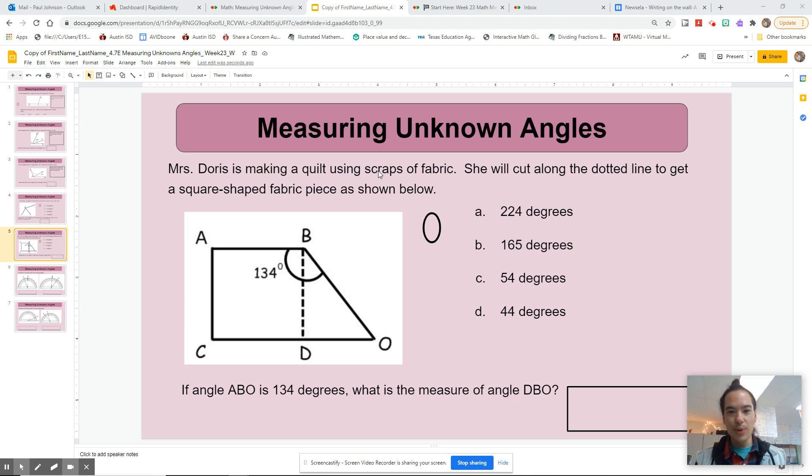So it says, Miss Doris is making a quilt using scraps of fabric. She will cut along the dotted line to get a square-shaped fabric piece as shown below. So, if angle ABO is 134 degrees, what is the measure of angle DBO?